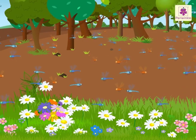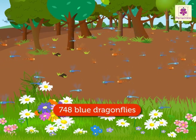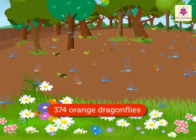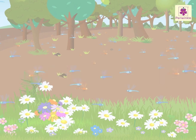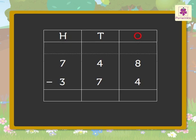Look at those blue and orange dragonflies! There are seven hundred forty-eight blue dragonflies and three hundred seventy-four orange dragonflies. How many more blue dragonflies are there than the orange ones? Here we have to subtract seven hundred forty-eight and three hundred seventy-four to find the difference between blue and orange dragonflies.